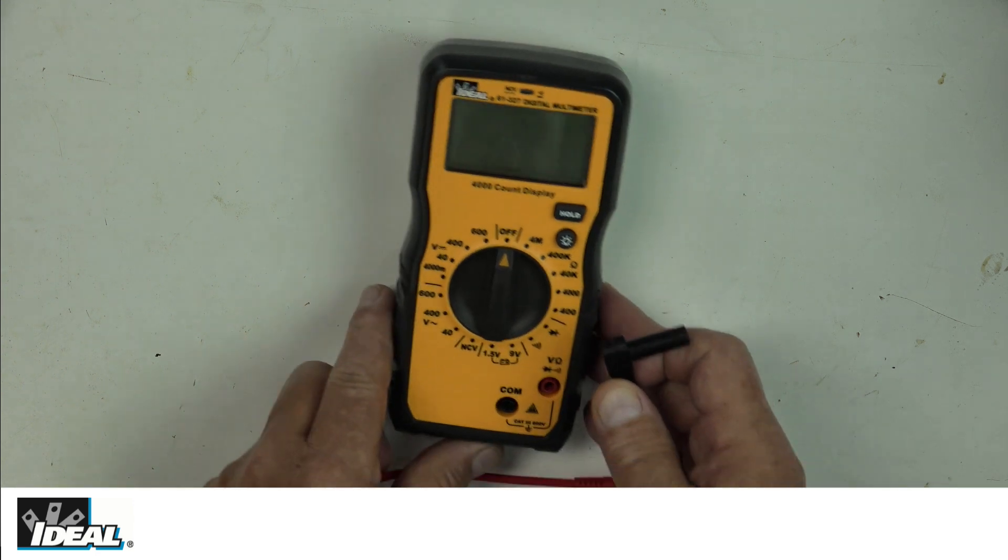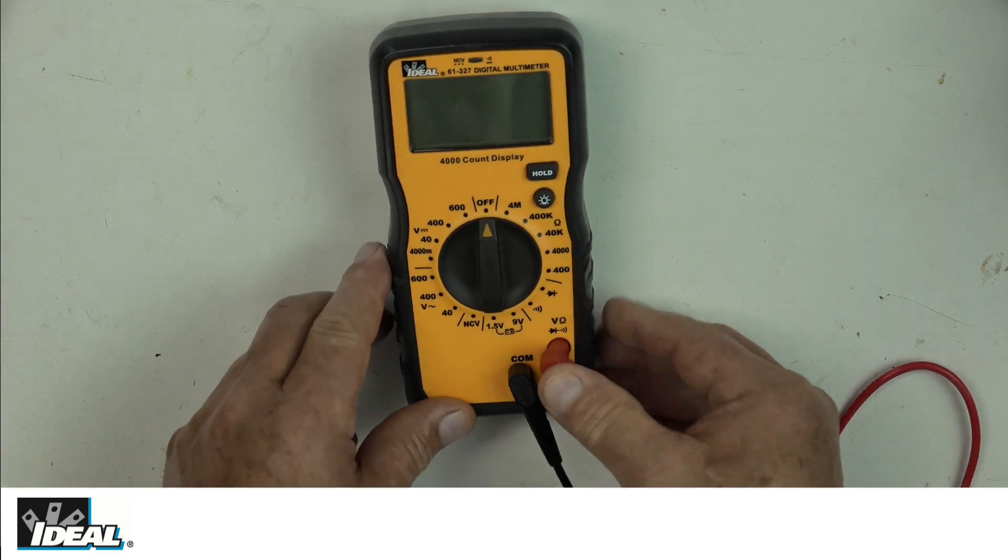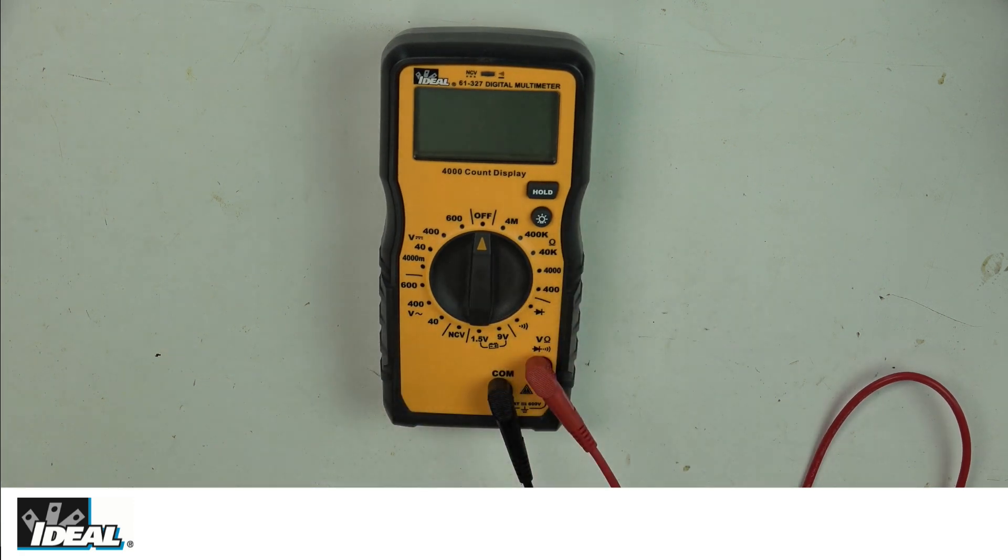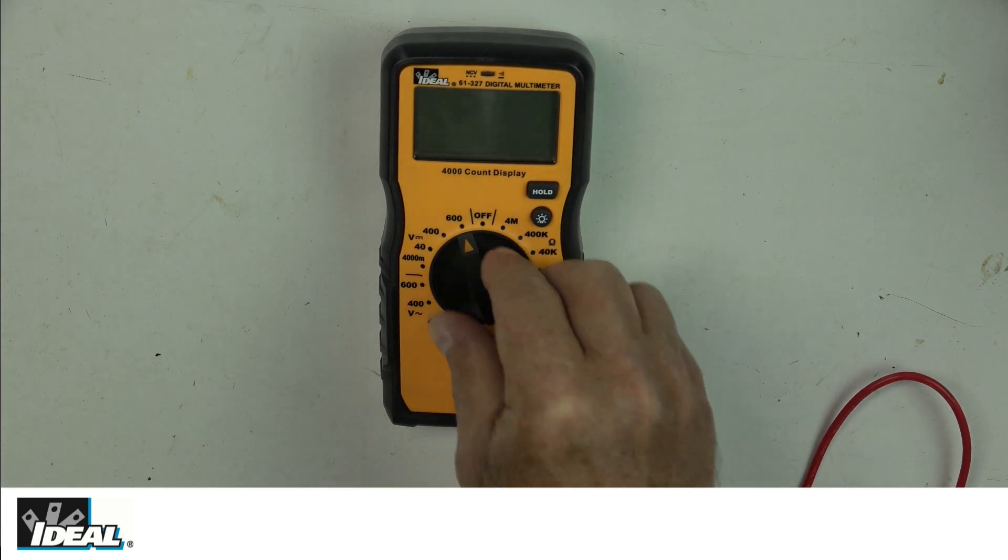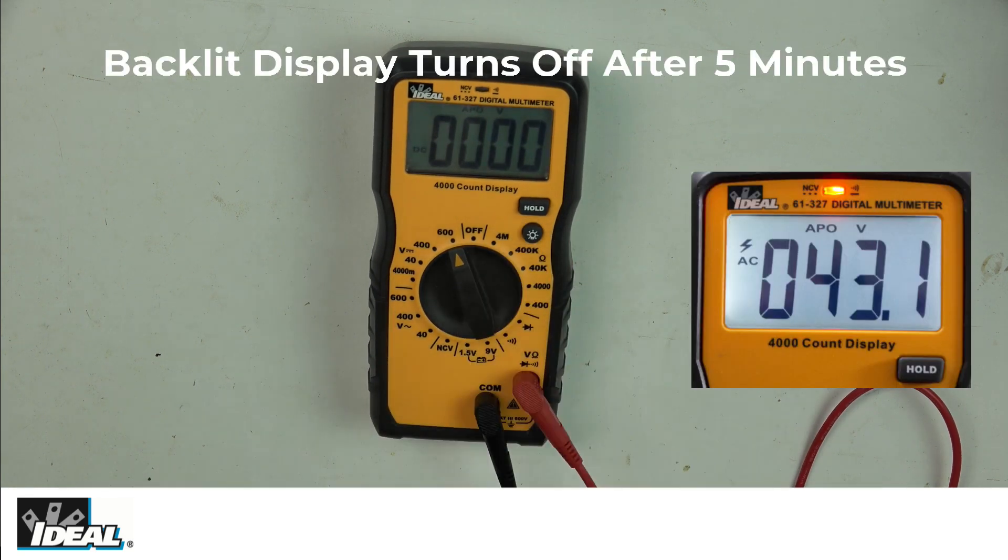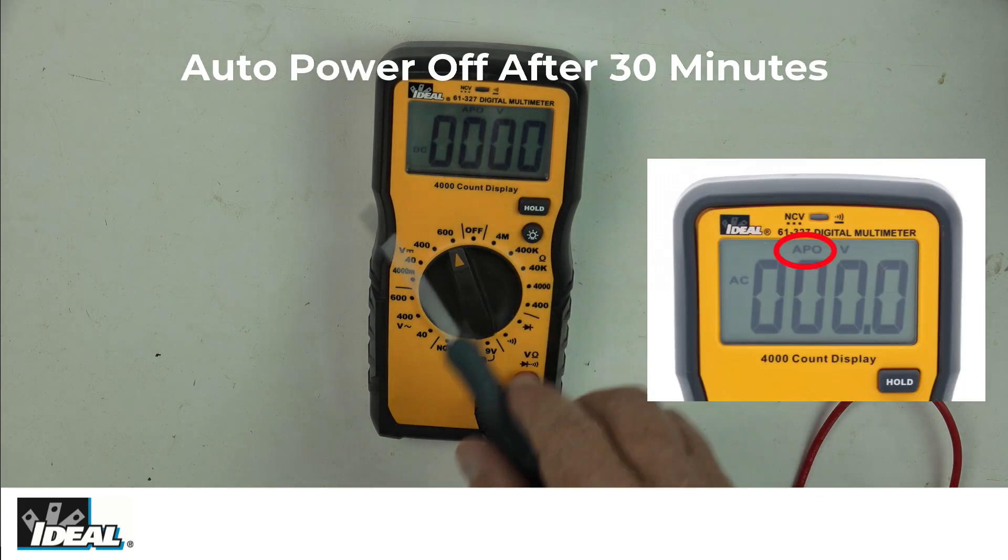The black lead goes into the black common port and the red lead goes into the red port. When you first turn the tester on, there's a button right here which is a backlight. If you press the backlight, you get a brighter display. If you're in a dim or dark area, the backlight's nice to have. It lasts for five minutes and automatically turns off. You just hit the backlight again to turn it back on.